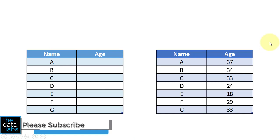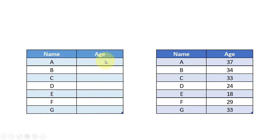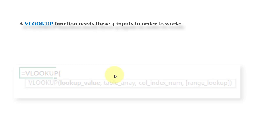Instead of moving from one dataset to another dataset and retrieving the matching value manually, you can use the VLOOKUP formula to automate this process. Let us understand the VLOOKUP function structure and parameters.